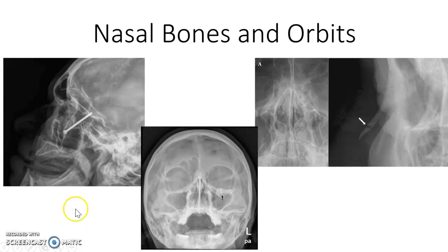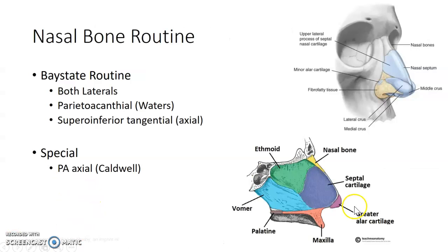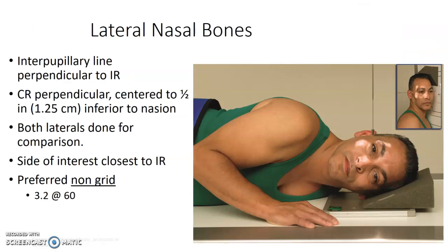Nasal bones and orbits. For our nasal bone routine at our clinical site, we do both laterals, a Waters, and a tangential. Some locations may do a Caldwell as well. So this image is just for anatomy purposes — lateral nasal bones. These can either be done upright or recumbent.